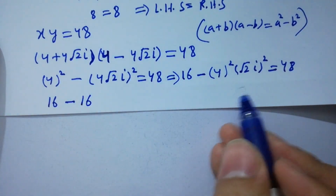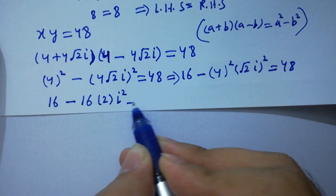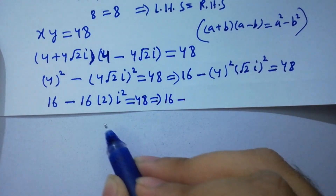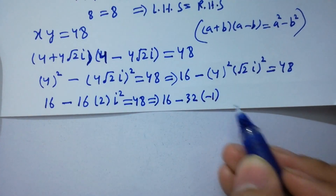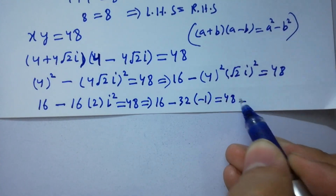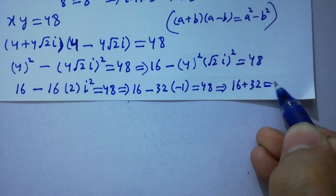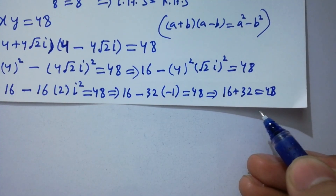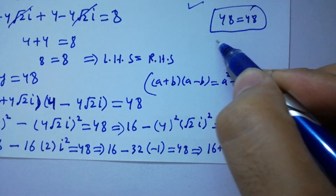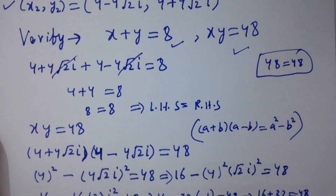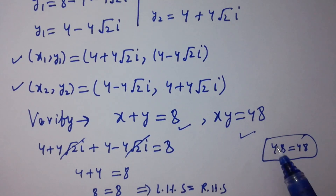After cancellation we have 4 squared minus (4 square root of 2i) squared, giving 16 minus 16 times 2 times i squared. Since i squared equals minus 1 from complex numbers, this becomes 16 minus 32 times (minus 1) equal to 16 plus 32 equal to 48. So 48 equals 48, left hand side equals right hand side, which confirms that the values of x and y satisfy x plus y equal to 8 and x times y equal to 48.